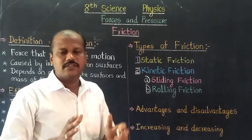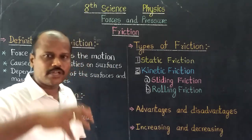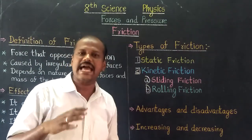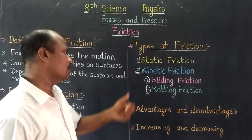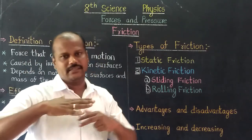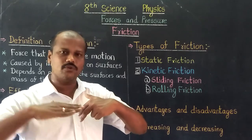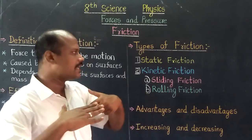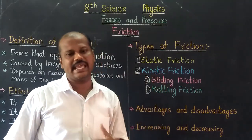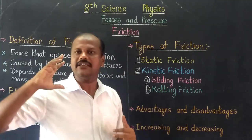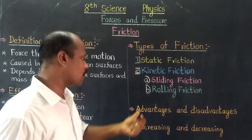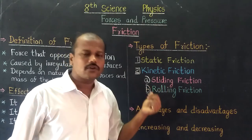Static friction is used when objects are at rest. If you have two objects, kinetic friction occurs when the two objects are in motion with one direction. Kinetic friction is of more than two types: sliding friction and rolling friction.